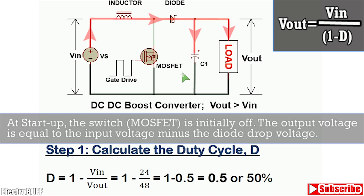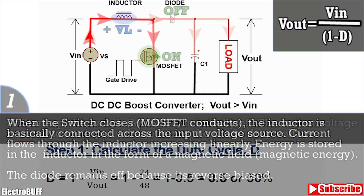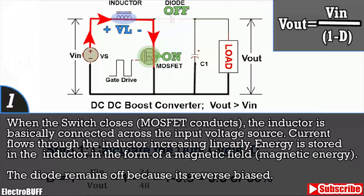The working is fairly simple. Initially the MOSFET is off and the circuit is as shown, so the output will be V in minus the diode drop. In the first case, the switch will be closed, so current flows from V in through the inductor and back to the negative supply through the switch. The inductor begins storing charge and the voltage across it is as shown.